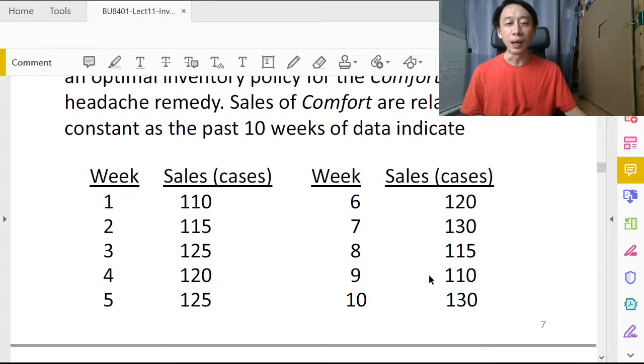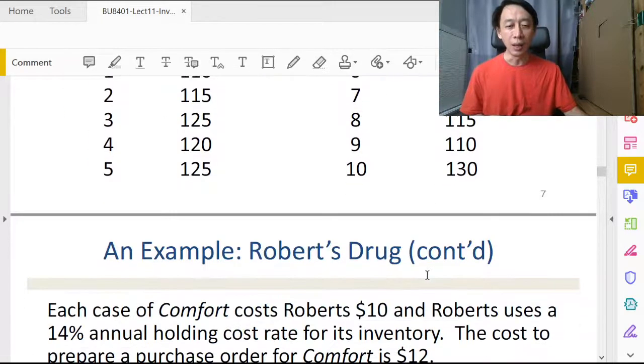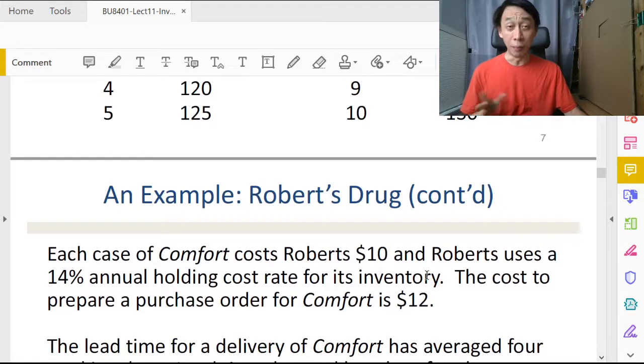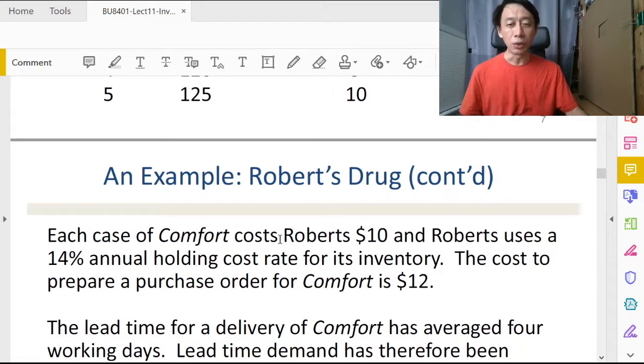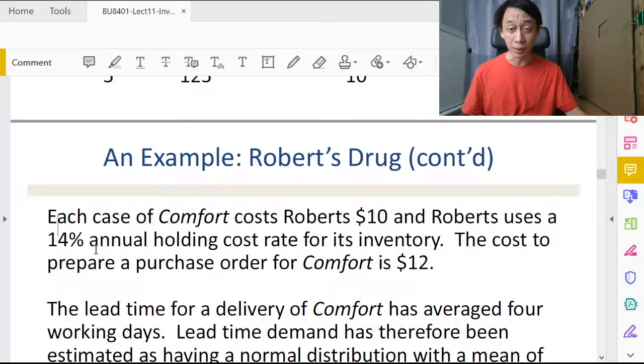We're given some data here in the past 10 weeks and the idea is to determine a policy, meaning the quantity to order and when should we order in terms of the order point. We are given the cost per unit, 14% annual holding cost rate, which is like an interest charge that we have to pay in addition to buying the good, which is the drug.